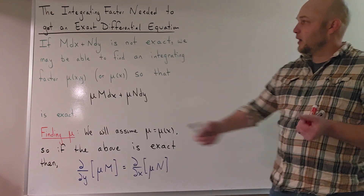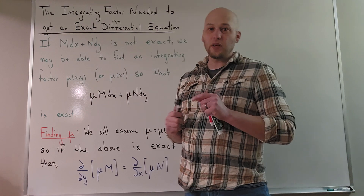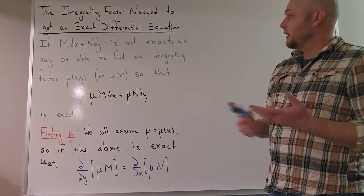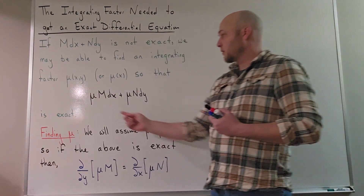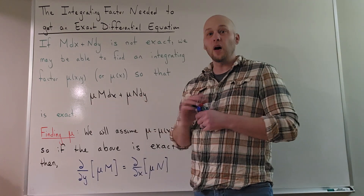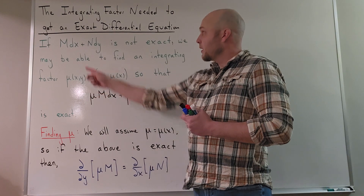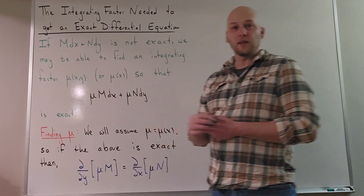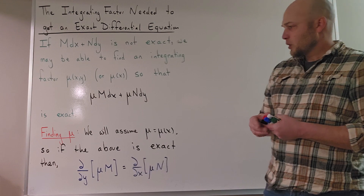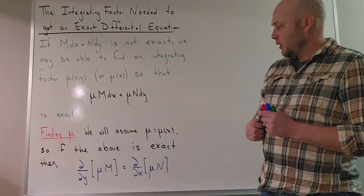So let's say mdx plus ndy — that expression is not exact. We may be able to find an integrating factor so that when I multiply that expression by mu, it does become exact. So what function can I multiply this expression by so that I get an exact expression?